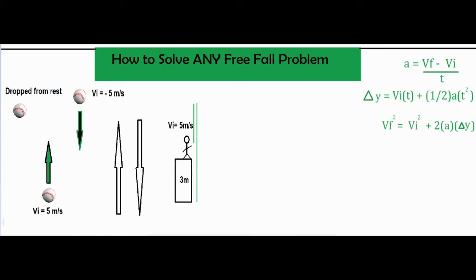We have a few different starting scenarios. Something could be dropped from rest, in that case the initial velocity would be zero meters per second. Although a problem might not explicitly say zero meters per second, look for keywords and the starting velocity may be zero. Key things to pay attention to: anything going upwards is positive and anything going downwards is negative, which could be a velocity, a delta y, or an acceleration. Time is the only one that's not a vector and won't be negative.